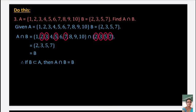Third problem: A = {1, 2, 3, 4, 5, 6, 7, 8, 9, 10} and B = {2, 3, 5, 7}. Find A ∩ B. The common elements of A and B are 2, 3, 5, 7, so A ∩ B = {2, 3, 5, 7}. We notice that A ∩ B = B, which shows that B ⊆ A — when B is a subset of A, then A ∩ B = B.